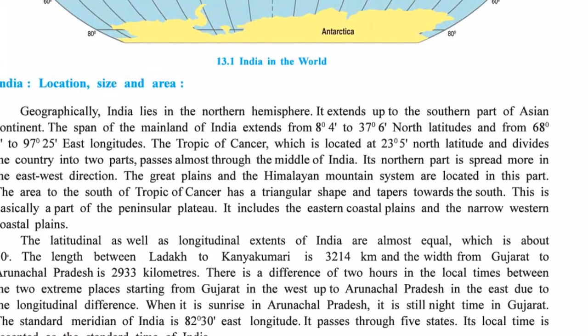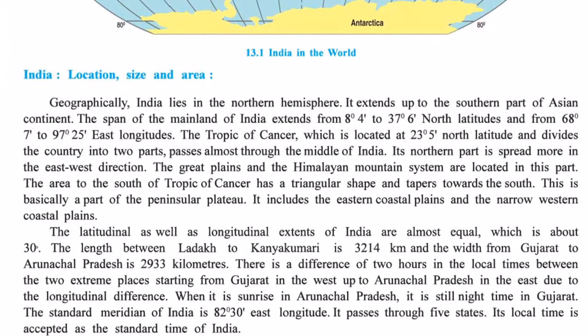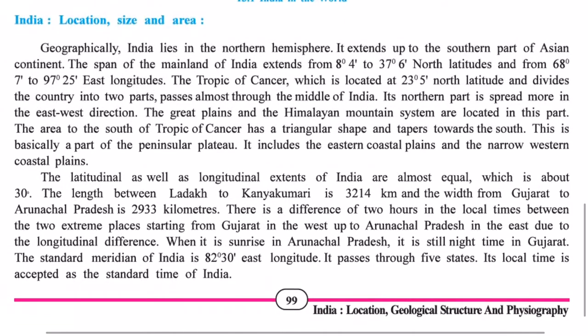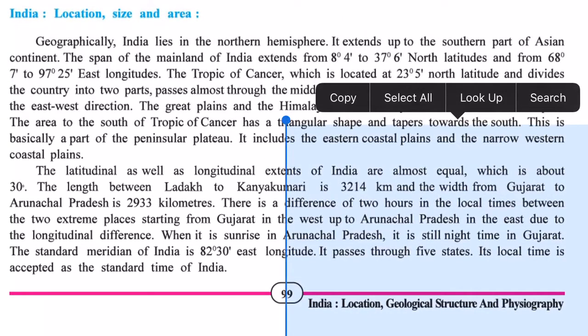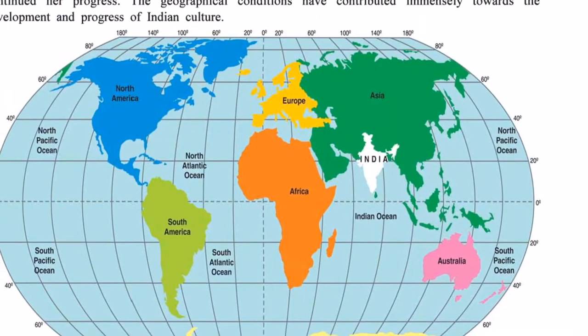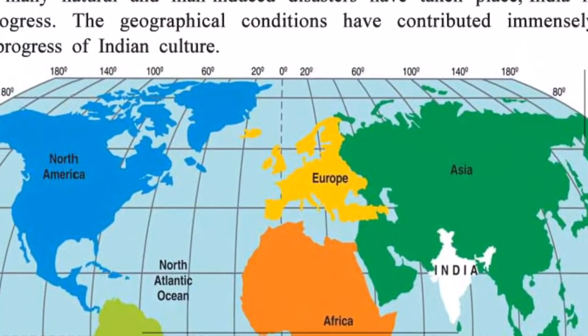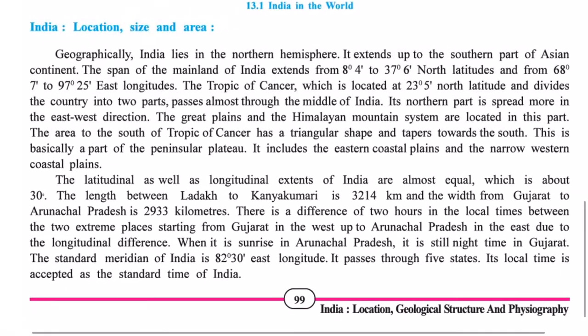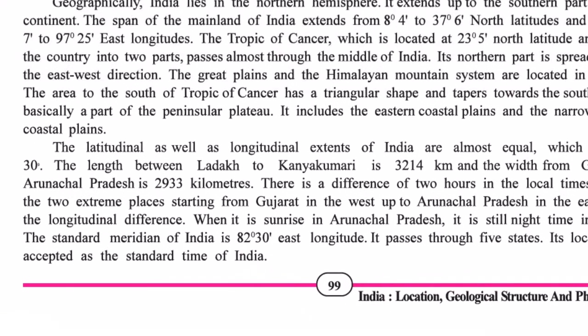India lies in the northern hemisphere, which extends to the southern part of the Asian continent. India's location is 8.4 degrees to 37.6 degrees north latitude, and 68.7 degrees to 97.25 degrees east longitude. The Tropic of Cancer, at 23.5 degrees north latitude, passes from the center of India and divides India into two halves — the northern hemisphere and the southern hemisphere.